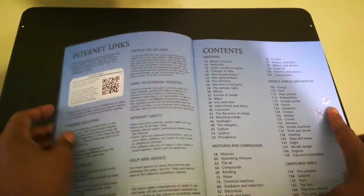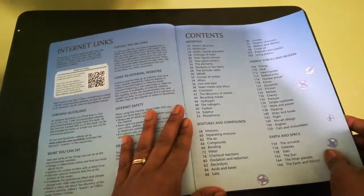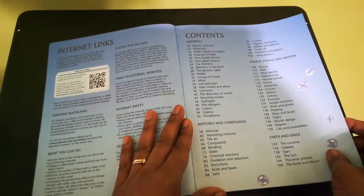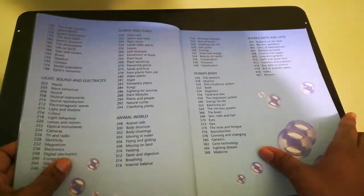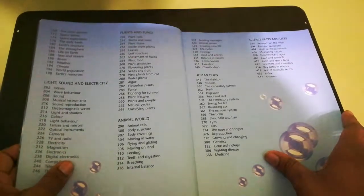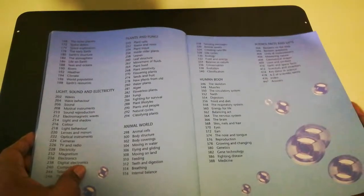So what does this book talk about? This book talks about materials, mixtures and compounds, earth and space, energy, force and motion, light, sound, electricity, animal world, plant and fungus or fungi, human body, science facts and lists.